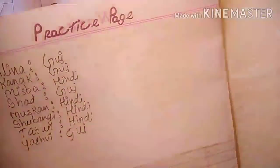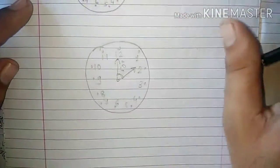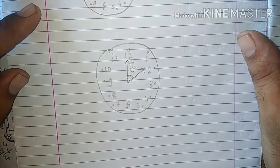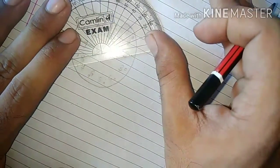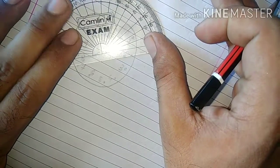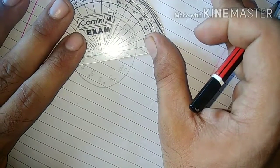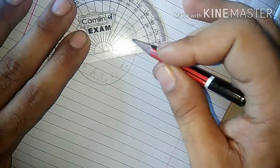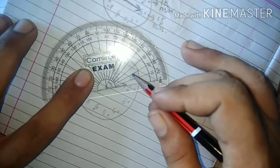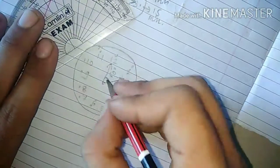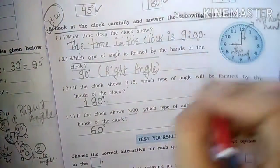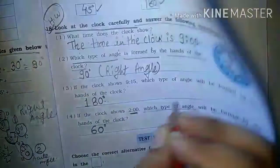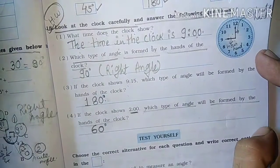If the clock shows 2 o'clock, what type of angle will be formed by the hands of the clock? When the clock shows 2 o'clock, put your protractor here and measure the angle. Students, it is showing 60 degrees. This angle is 60 degrees — a 60-degree angle is formed when the time is 2 o'clock.